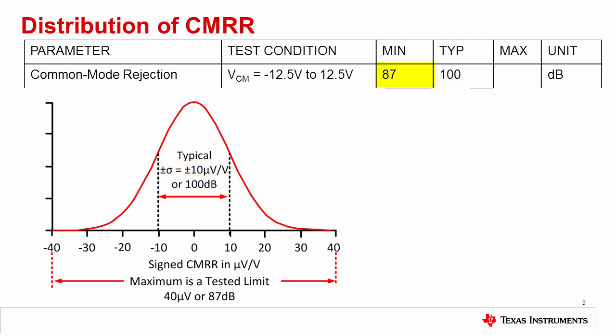When the datasheet table provides a minimum value for CMRR, this means that CMRR is tested, and any device with a CMRR worse than the minimum level is considered a failure and is discarded. So, for this example amplifier, any device with a CMRR less than 87 dB is discarded. Of course, the minimum value of CMRR also corresponds to the tails of the distribution, which in this case are at plus minus 40 microvolts per volt, or 87 dB. Notice that the sign of the CMRR in volts per volt can either be positive or negative, but that the sign of the decibels will always be positive.